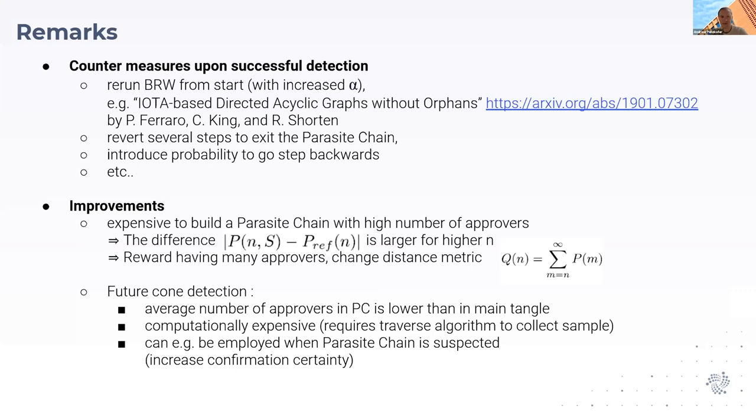We can also add certain improvements. For example, as I said, it's more difficult for an attacker to include high numbers of approvals in the parasite chain. So you can reward having high numbers of approvals by changing your distance metric to this Q here. You can also perform future cone detection, but this requires another walk algorithm that is fairly expensive, so it's only worth doing occasionally.